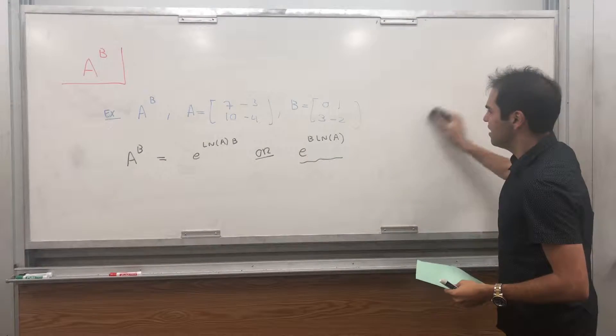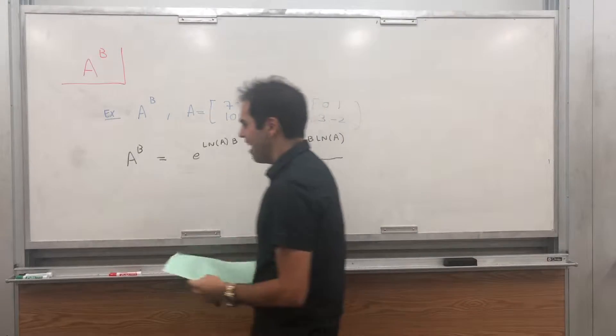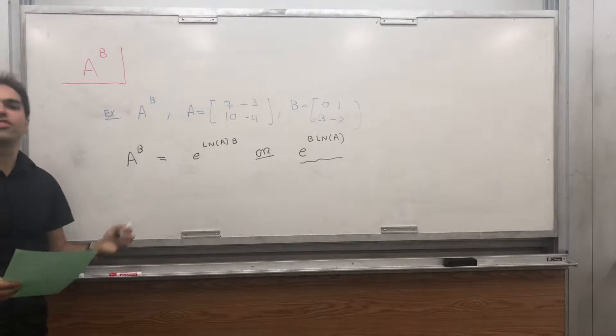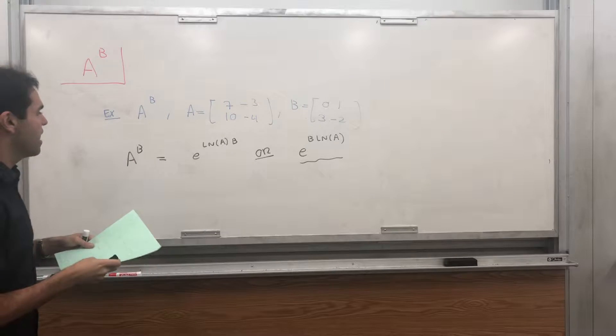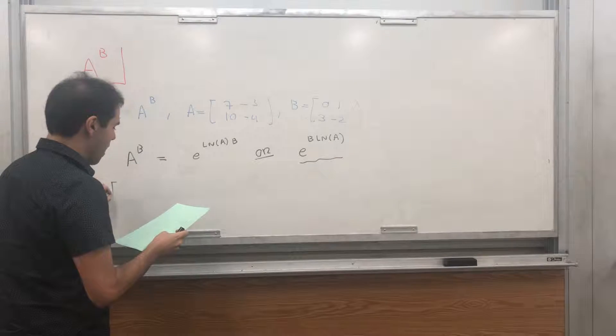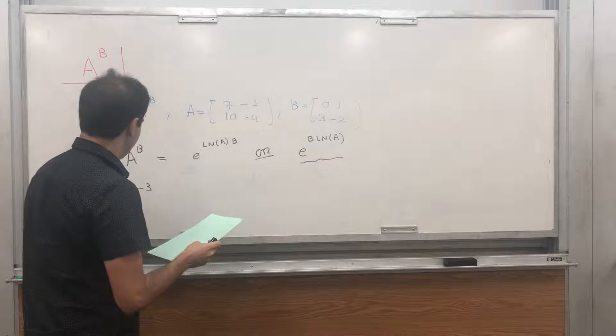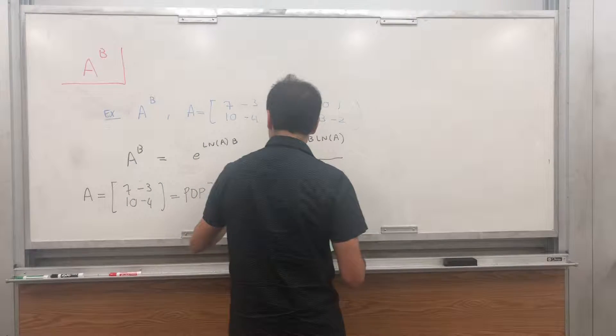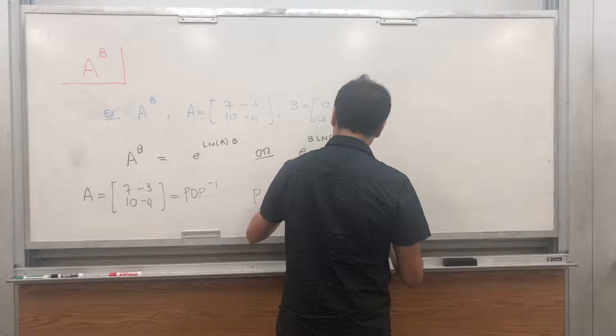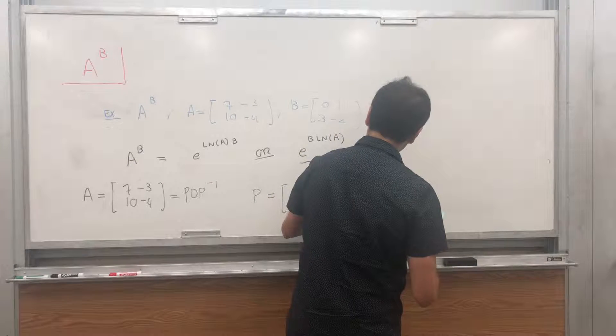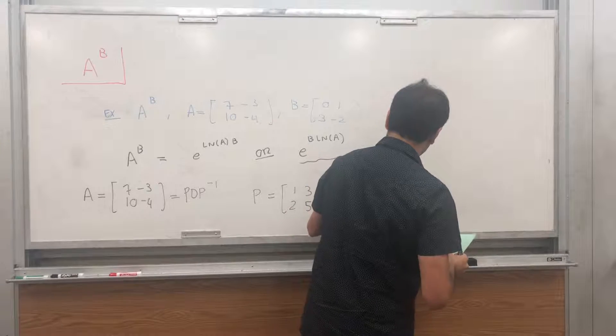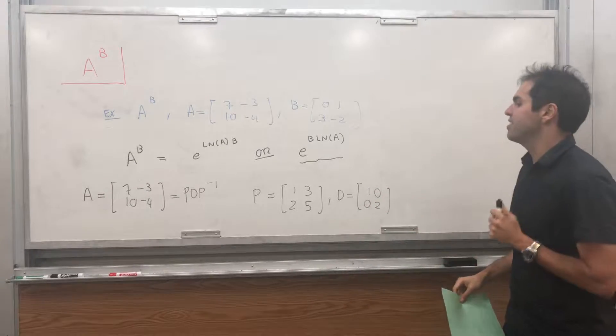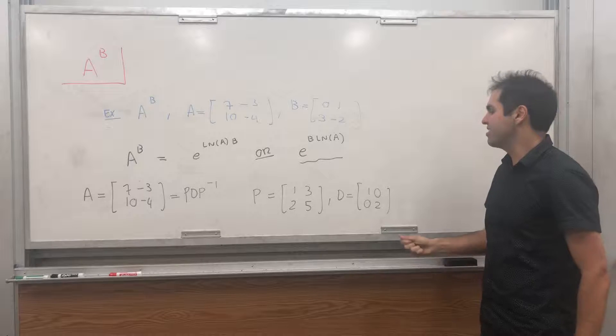So, here let's evaluate e to the B of ln of A. And, in general, that's a tricky issue. But, if A is diagonalizable, it's not that bad. And, it turns out A is diagonalizable. So, A, again, which is 7 minus 3, 10 minus 4, you can write this as P D P inverse, where P is just 1, 2, 3, 5. And, D is 1, 0, 0, 2.